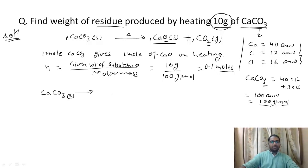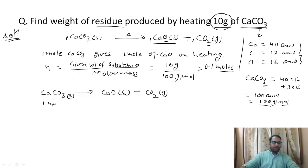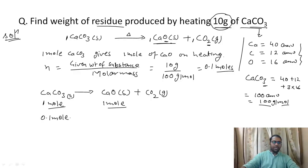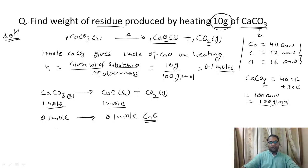From the balanced chemical equation, CaCO₃ solid gives CaO solid and CO₂ gas. From stoichiometry, 1 mole of CaCO₃ gives 1 mole of CaO. So if we have 0.1 moles of calcium carbonate, by the unitary method we get 0.1 moles of calcium oxide.